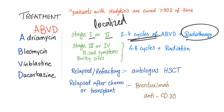For relapsed or refractory cases, autologous hematopoietic stem cell transplant is used. For relapsed disease after chemo or transplant, you can try brentuximab, which is a monoclonal antibody against CD30. As you know, the Reed-Sternberg cell can be CD15 positive and CD30 positive.